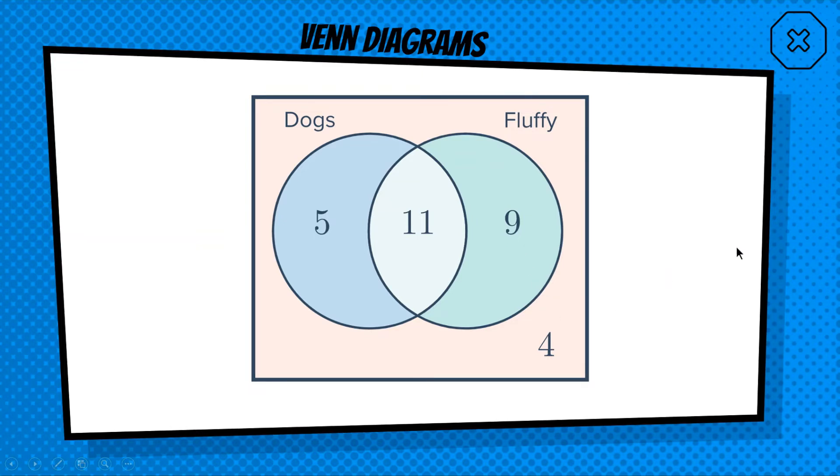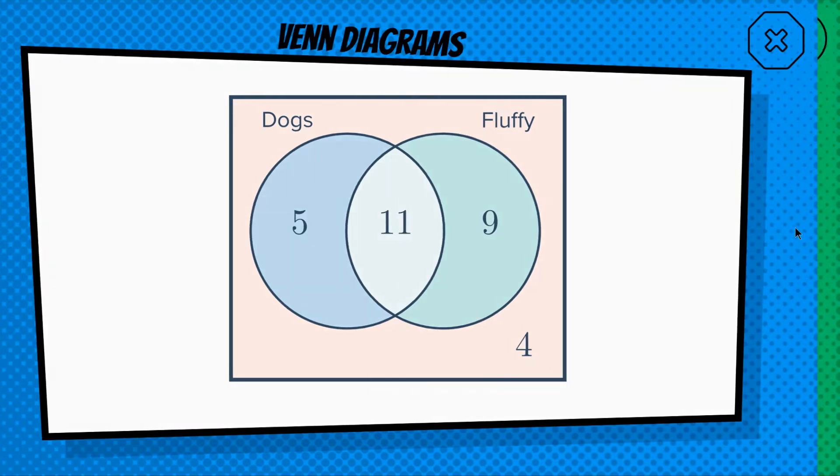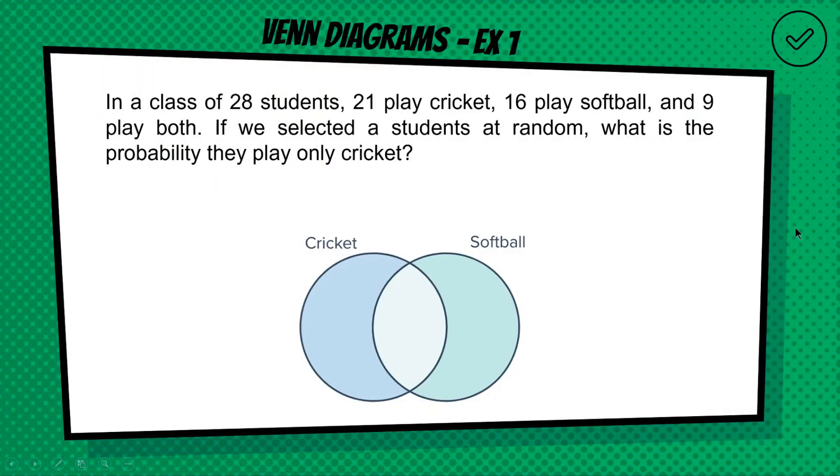All right, let's have a go at an example. So we have a class of 28 students, we have 21 playing cricket, 16 playing softball, and nine playing both. If we selected a student at random, let's pretend that just says student for me, if we selected a student at random, what is the probability they play only cricket? All right, so here is the trick with Venn diagrams. You have to be a bit careful with your numbers, and I'll show you why.